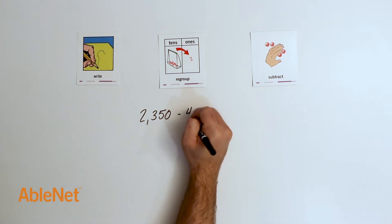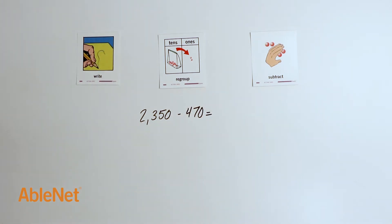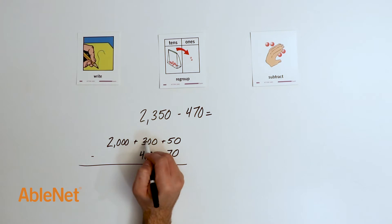How many t-shirts does she have left from her order? I can start by writing the problem in expanded form: 2,000 plus 300 plus 50, then the second amount, 400 plus 70. I can check to see if I need to regroup. I need to regroup the tens and hundreds place.